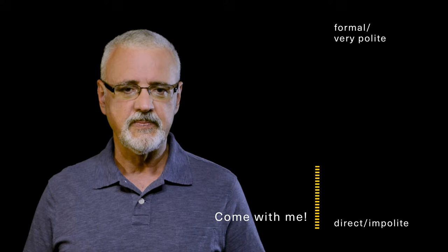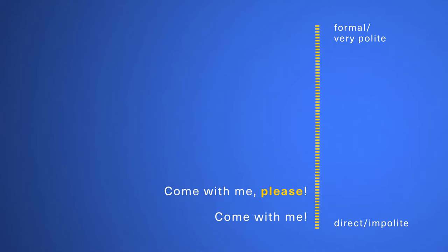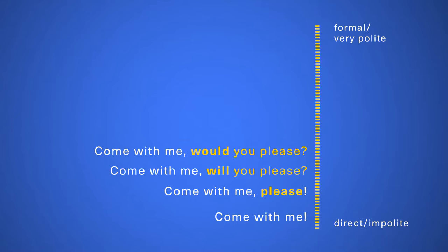Let's look at another example in English. We have only one imperative form of the verb, as in 'Come with me.' Direct commands are not always socially appropriate, so we might add 'please' to add a level of politeness. But it still sounds a bit direct, so how about adding a question tag? 'Come with me, will you please?' — 'Come with me, would you please?' That makes the command sound friendlier and friendlier, doesn't it? But the verb is still in the imperative form.